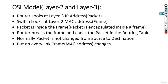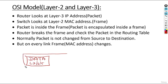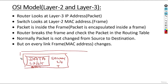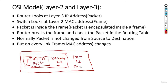Now we are going to see the OSI reference model in relation to routing. The OSI model has data at Layers 7, 6, and 5 — those are the application, presentation, and session layers. Data is then encapsulated inside a segment at Layer 4, which is called the transport layer. The segment is then encapsulated inside a packet at Layer 3, which is called the network layer.